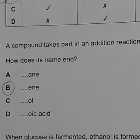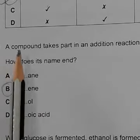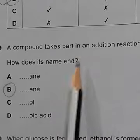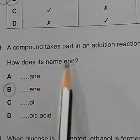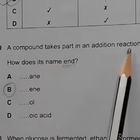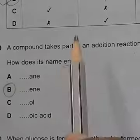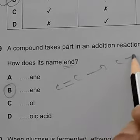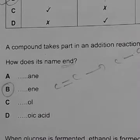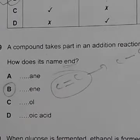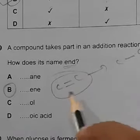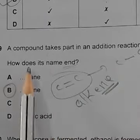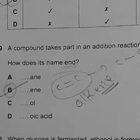Question 39: A compound takes part in an addition reaction — what type of compound is it, and how does its name end? Addition reactions involve compounds with carbon-carbon double bonds. These are alkenes, and their names end in '-ene.' So option B is the answer: the name ends in '-ene.'